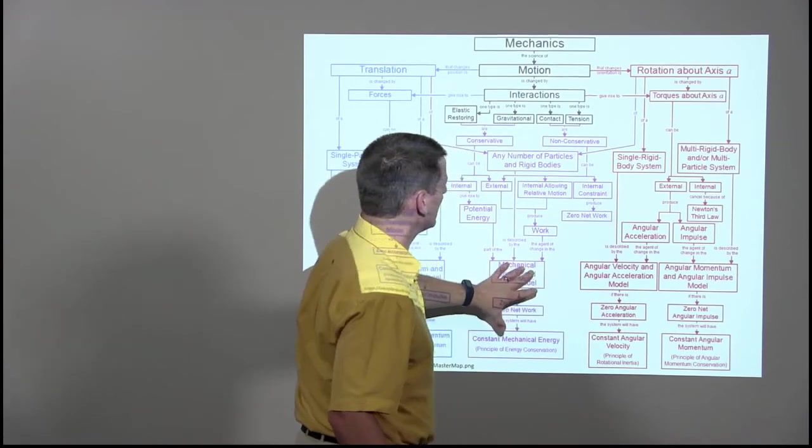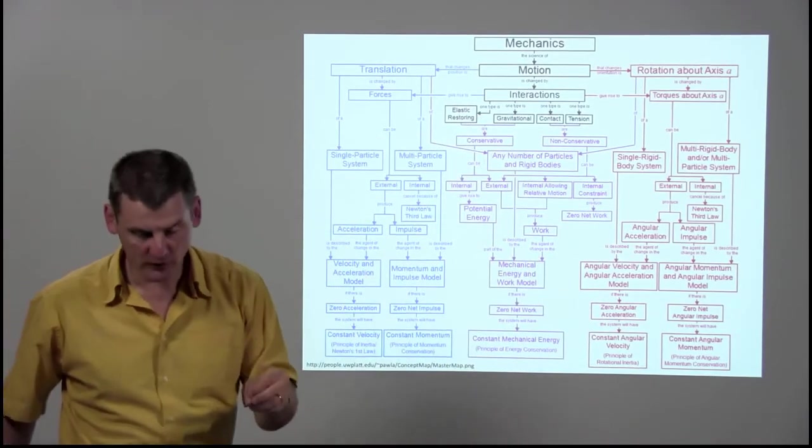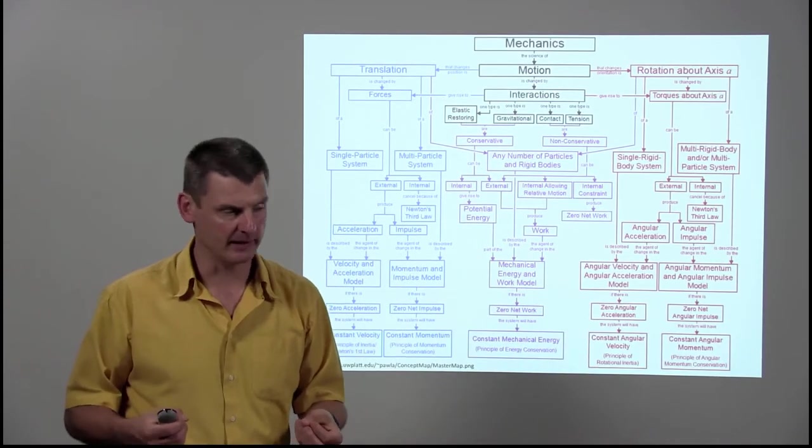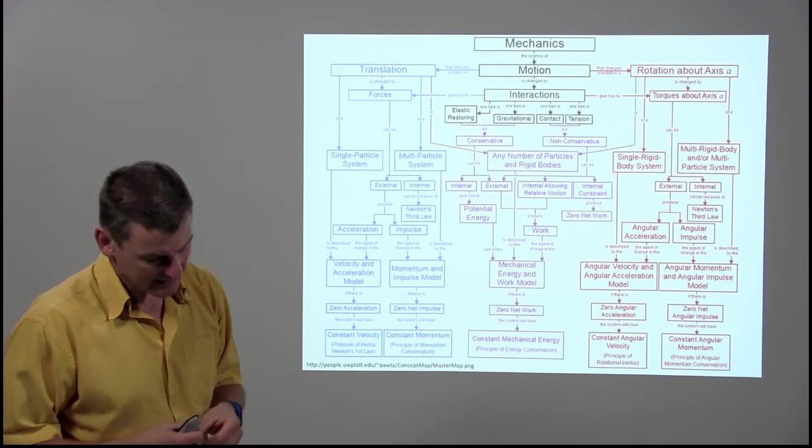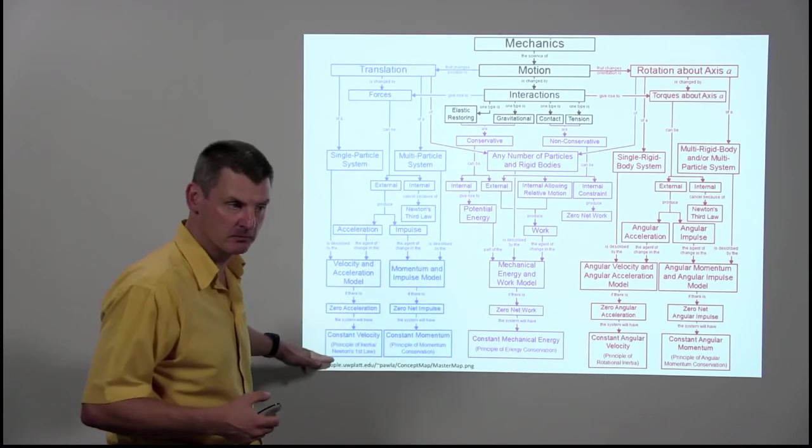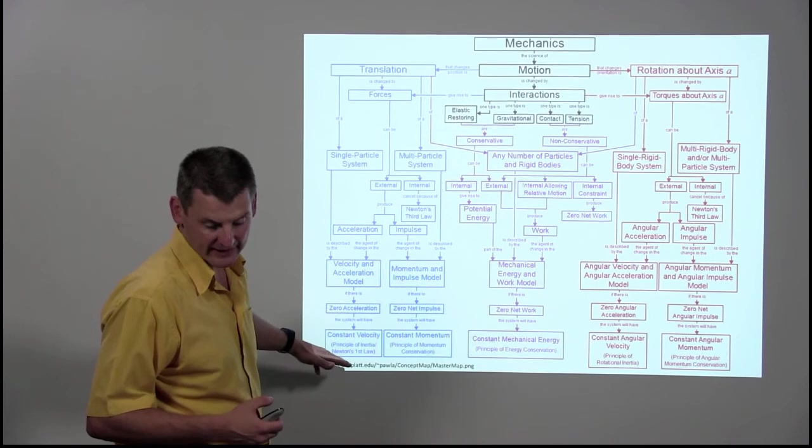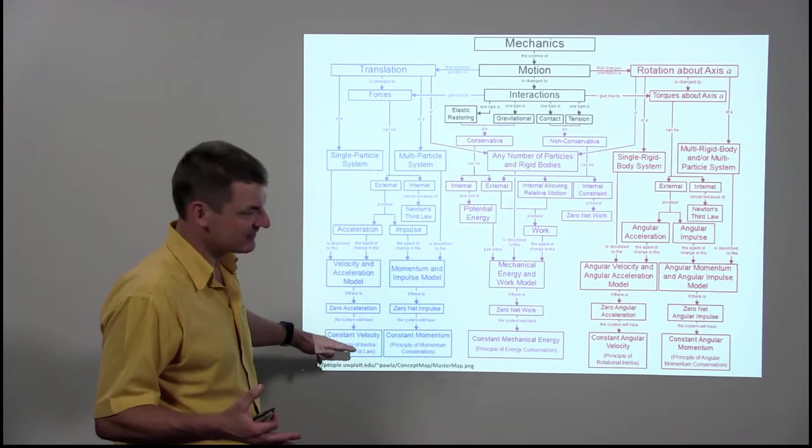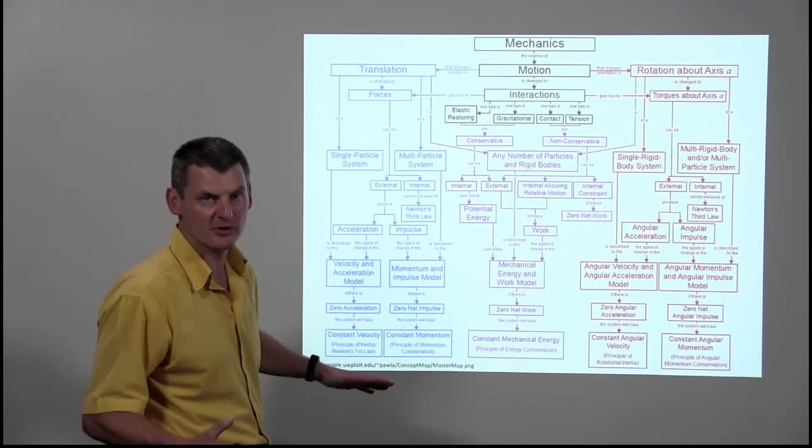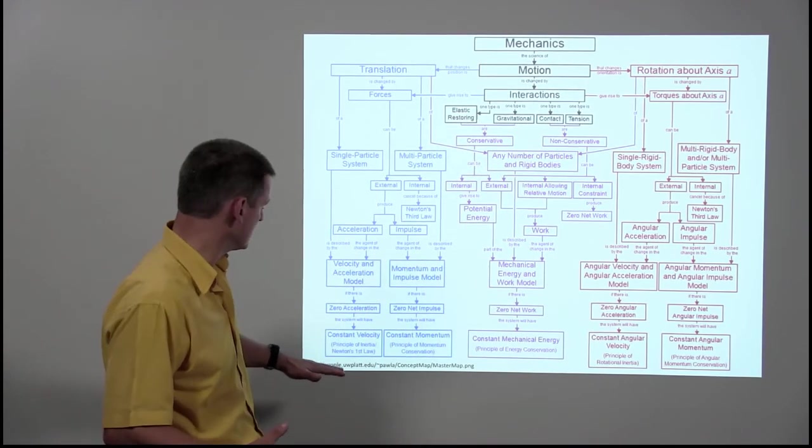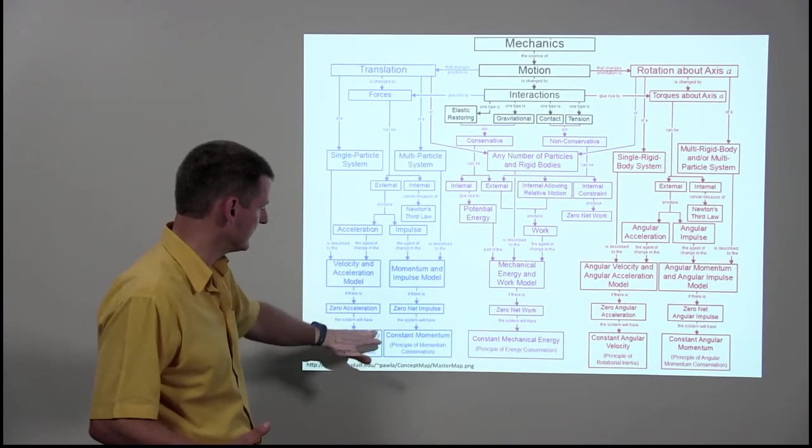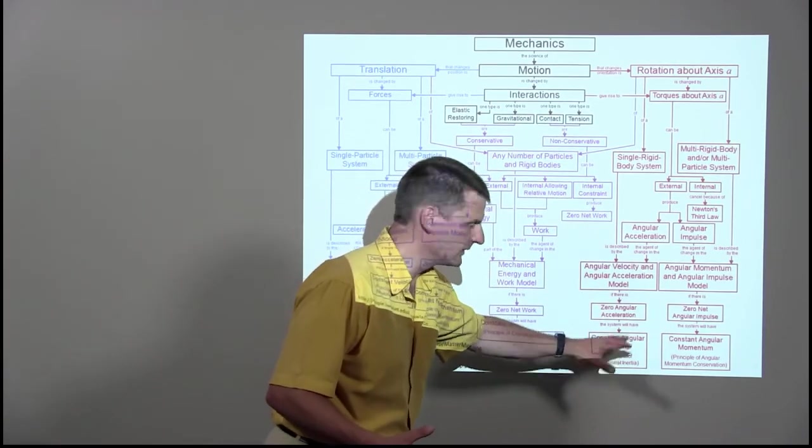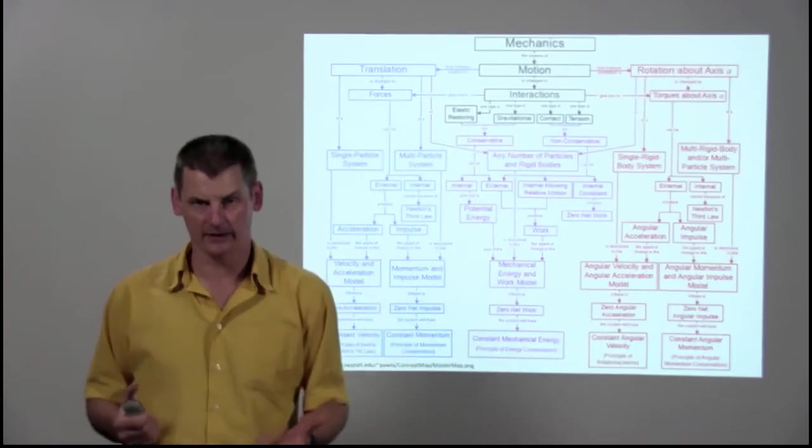And then down the middle, we have the interactions and the forces that cause or bring about these different types of motion. And if you go right down to the bottom line, then what you find are five big ideas that really cover most of the topics within this course. So we have principles about conservation of velocity, conservation of momentum, conservation of energy, and then conservation of velocity and momentum for angular motion.